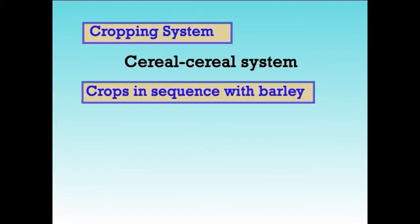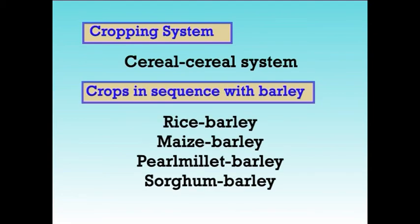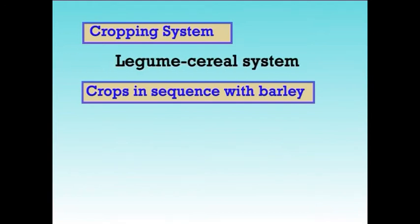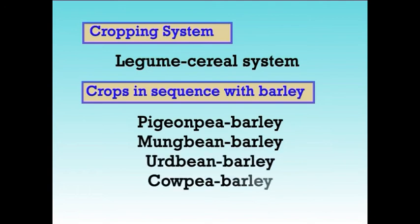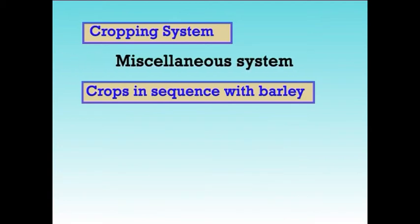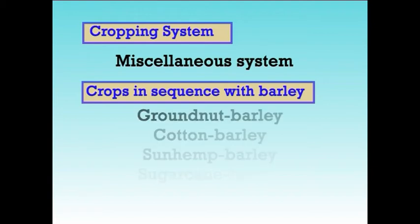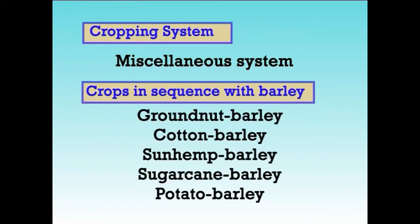The cropping systems followed in India include: cereal-cereal system in which rice-barley, maize-barley, pearlmillet-barley, and sorghum-barley are followed. Under legume-cereal system, it may be pigeonpea-barley, mungbean-barley, urdbean-barley, and cowpea-barley. Under miscellaneous systems, the cropping systems followed are groundnut-barley, cotton-barley, sunhemp-barley, sugarcane-barley, and potato-barley. Barley can also be mixed-grown with rabi crops like field-pea, chickpea, rajmas, rapeseed-mustard, and linseed.